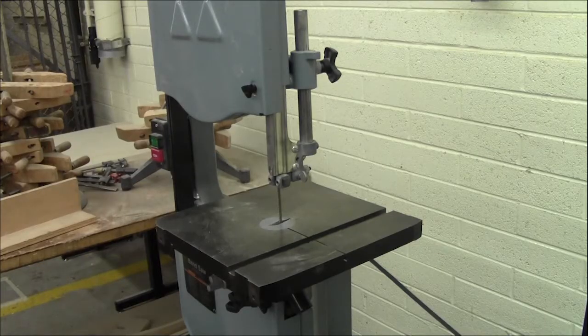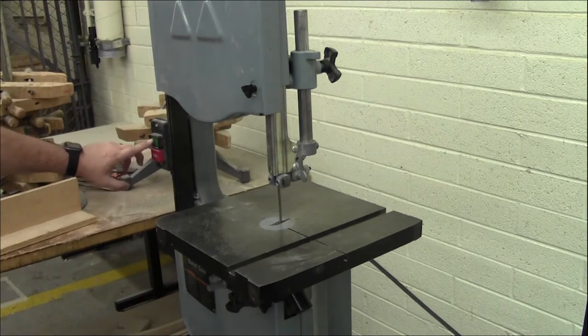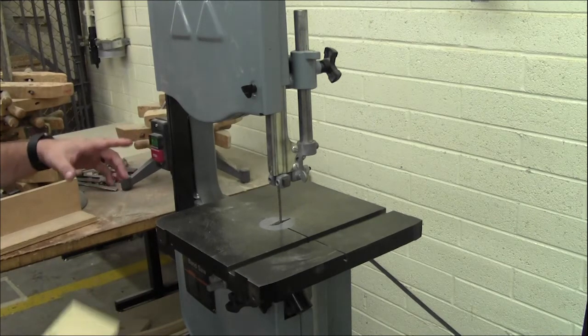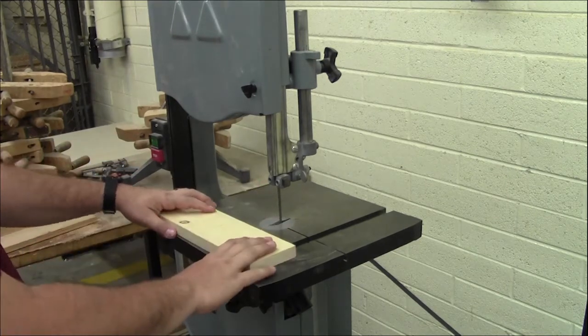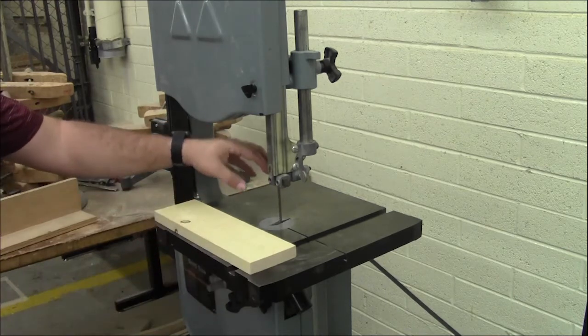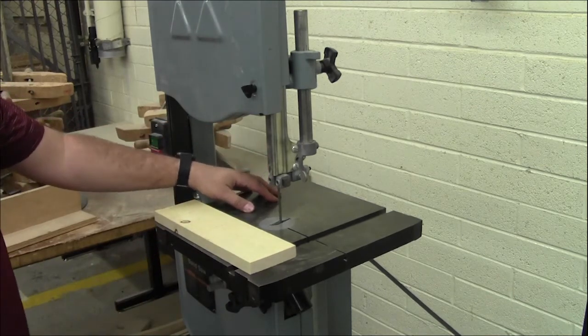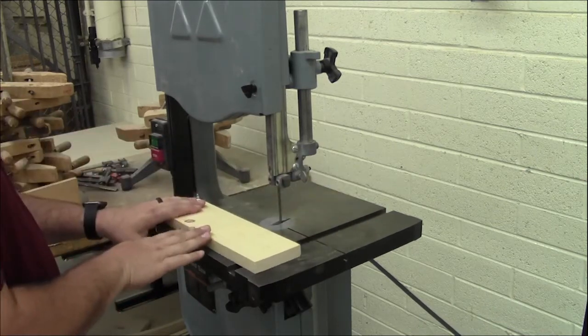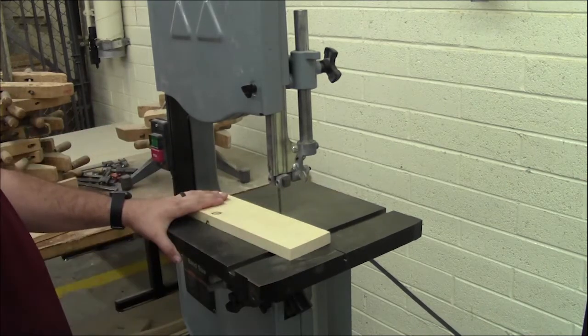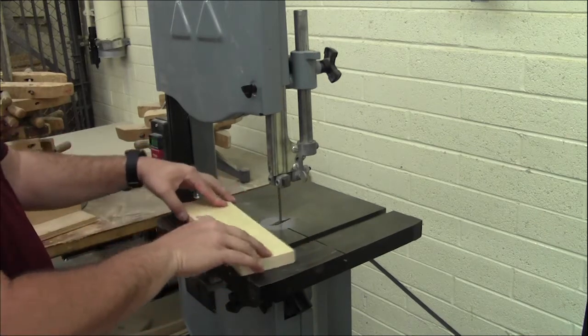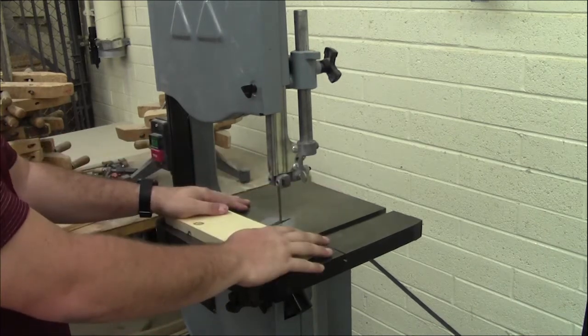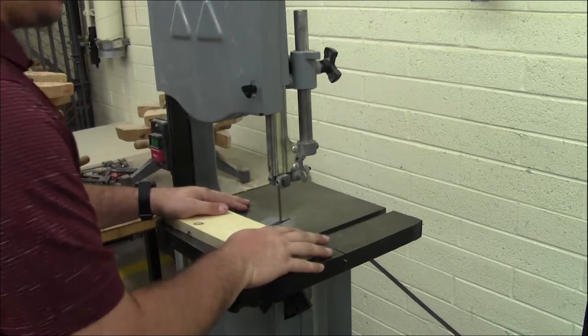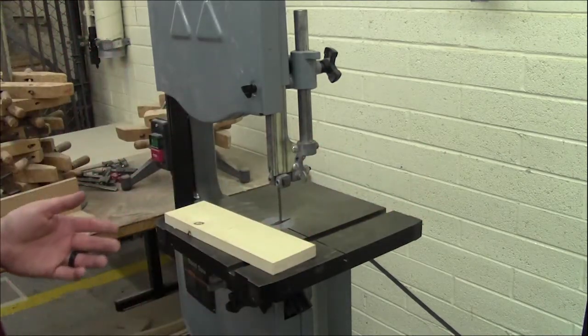We're going to show you basically how it works. Again, your power button is right here. I'm going to turn it on. You always want to make sure that the wood piece is kept on the table. And when you're cutting, both hands are on each side of the blade. You never want to have your hand directly in line with the blade. That way, if anything happens and goes through, you don't touch the blade.